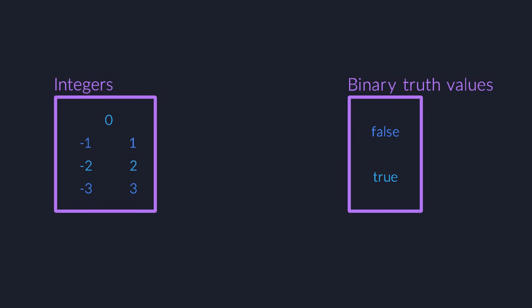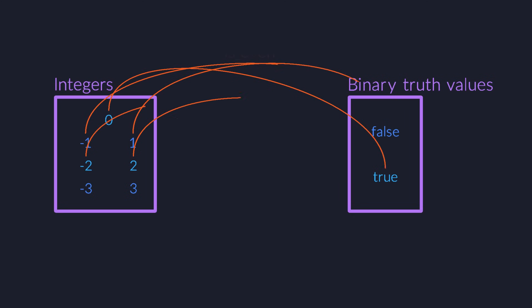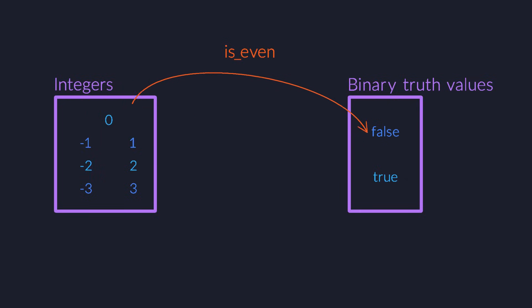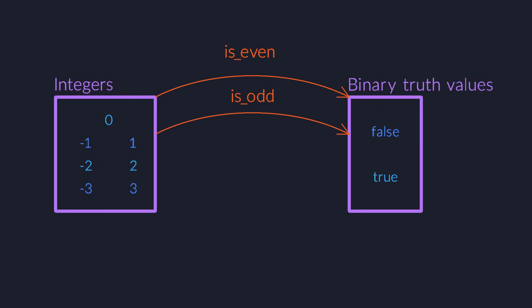The set of integers and the binary truth values, true and false. We have a function called isEven that maps even integers to true and odd ones to false. There are infinitely many functions from integers to binaries, and also infinitely many in the opposite direction.